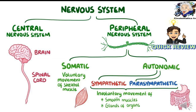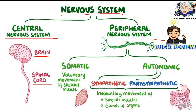Before proceeding to the next topic, let us have a quick review on the divisions of the nervous system. The nervous system is divided into two: the central nervous system and the peripheral nervous system. The CNS is comprised of the brain and spinal cord, whereas the PNS is further subdivided into the somatic and autonomic nervous systems. The somatic comprises cranial and spinal nerves, and the autonomic is composed of the sympathetic and parasympathetic nervous systems, each with their own specific functions.